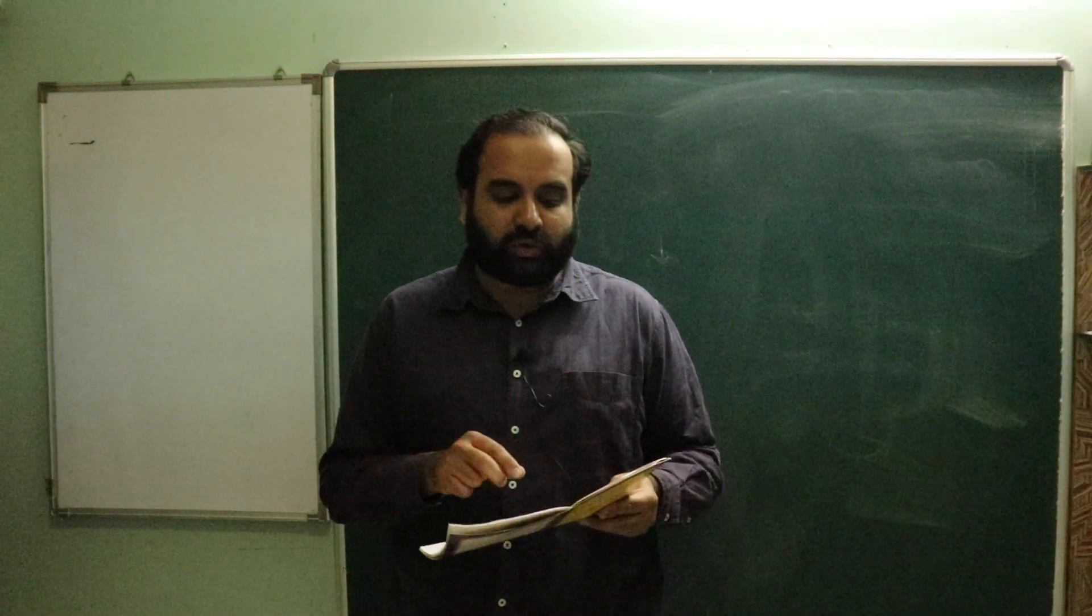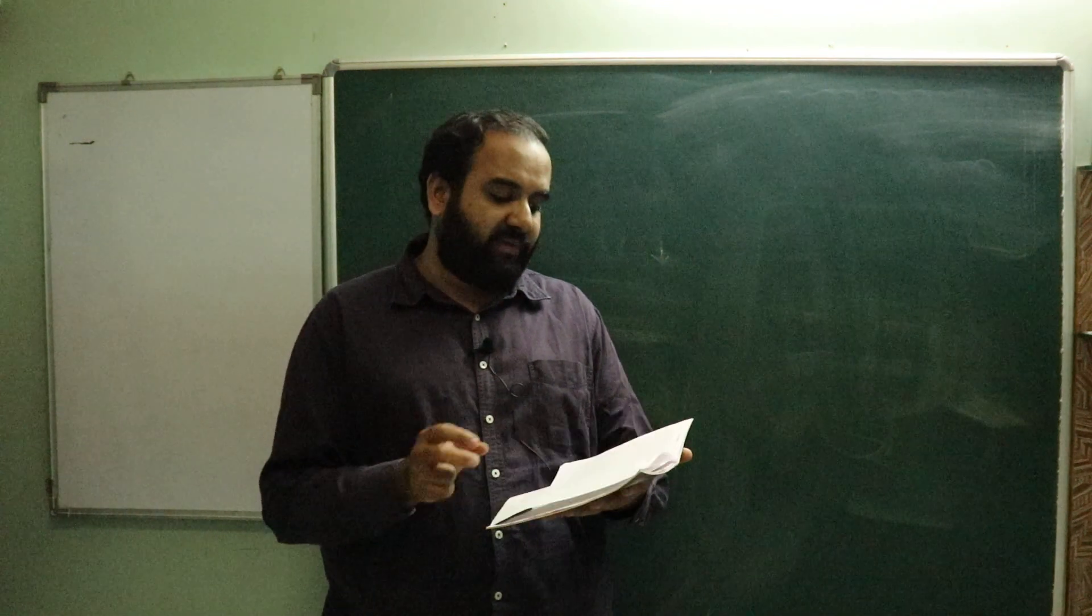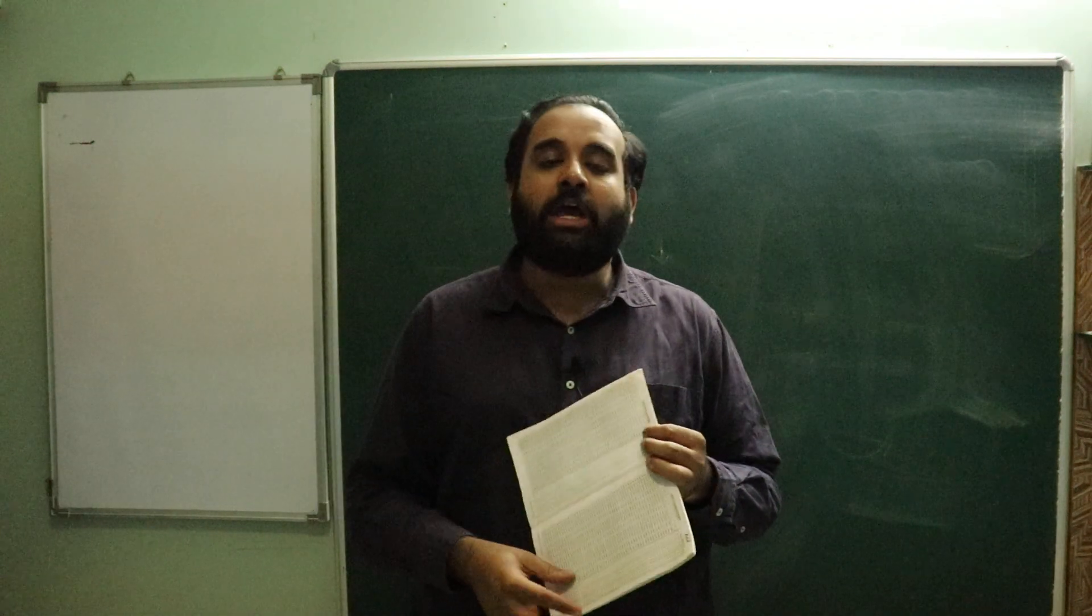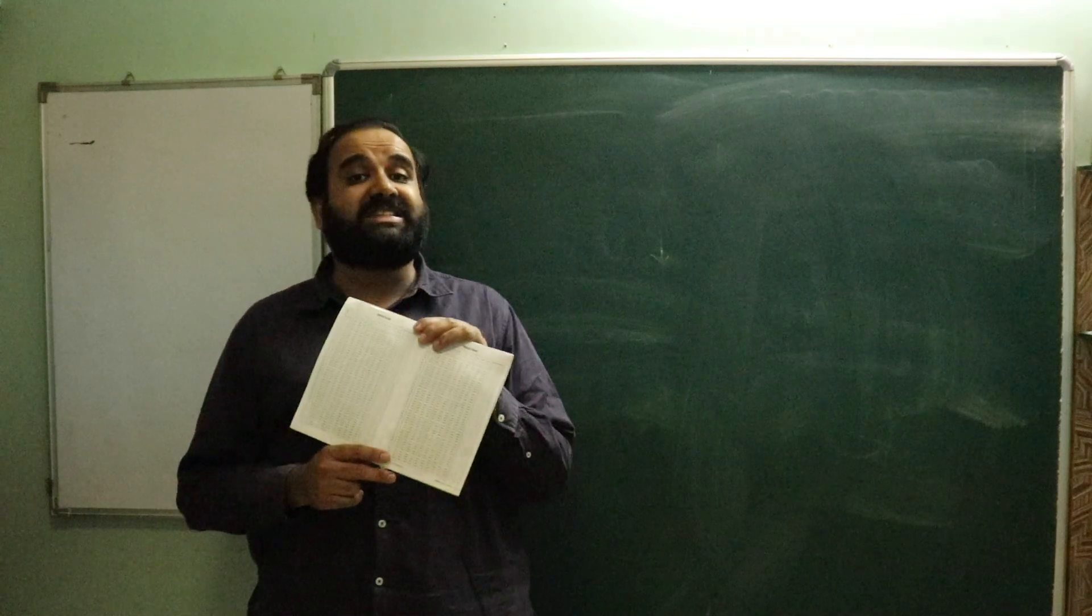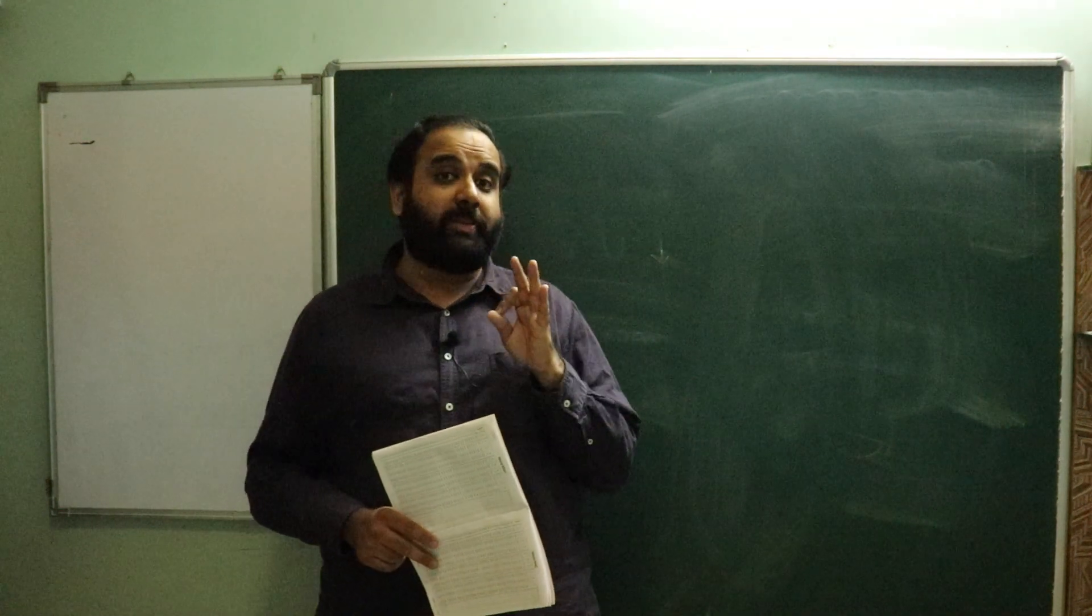Let us take one example. In this log book we have, first of all, the logarithms and the antilogarithms. After that you will find something called natural sines, then we have natural cosines, and then we have natural tangents. These three tables are going to be extremely useful for us, and basically they are used to find out the inverse value.